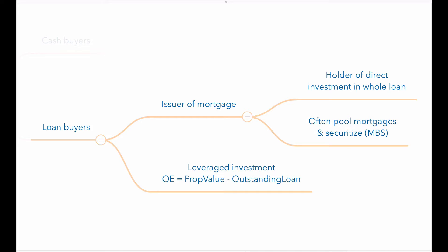Issuers will often sell these mortgages, which are then pooled or securitized and traded publicly as mortgage-backed securities. Property that is purchased with a mortgage is referred to as a leveraged investment, and the owner's equity in this investment equals the value of the property, which changes over time, less the outstanding loan amount.